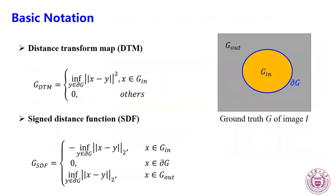Here are the basic notations of DTM and SDF. DTM computes the distance to the boundary for each pixel inside the object and takes zero outside the object, while SDF takes negative values inside the object, positive values outside the object, and zero at the boundary.